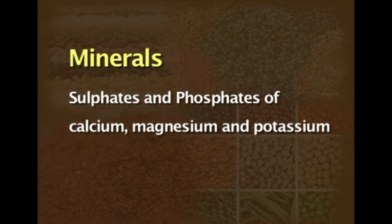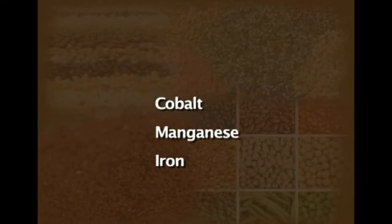Most of the minerals are in the form of sulphates and phosphates of calcium, magnesium and potassium, and 80% of the phosphorus is found in the form of phytin. The importance of phytin is that it interferes with the bioavailability of iron in our daily diet. This can be eliminated through processing techniques such as polishing, refining, germination and fermentation. Cereals also contain small quantities of cobalt, manganese and iron, and wheat increases in its iron content when iron rollers are used in mills for processing.